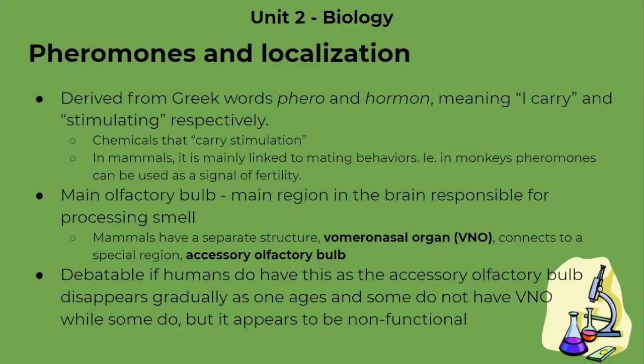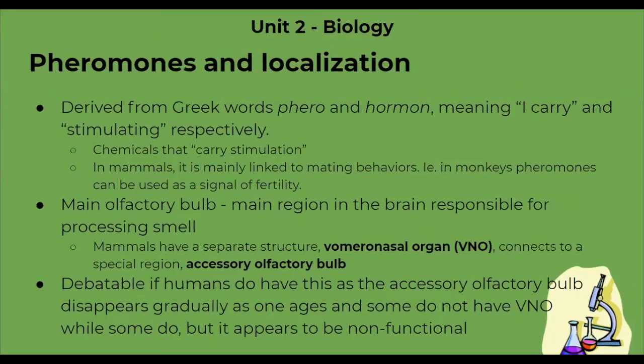In mammals, pheromones are mainly linked to mating behaviors. For example, in monkeys pheromones can be used as a signal of fertility. We also have the main olfactory bulb, which is the main region in the brain responsible for processing smell.